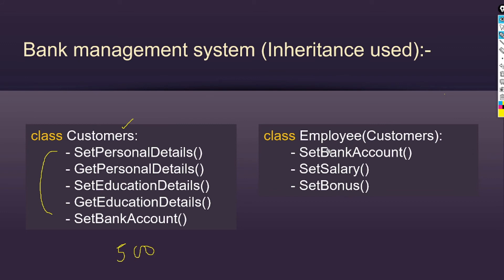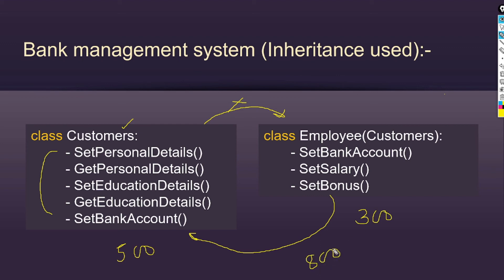Since the employee class is inherited from the customer class, employee class objects can access the customer class methods. But the vice versa is not possible — customers cannot access set bonus or set salary. With inheritance, employee class only needs 300 lines of code. Total lines written: 800. Without inheritance we wrote 1200 lines; with inheritance we wrote only 800 lines. The 400 lines were reused — this is called code reusability, achieved through inheritance.